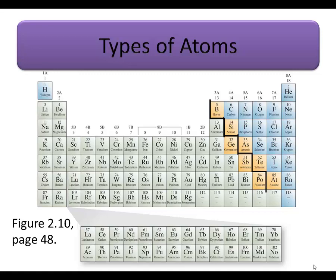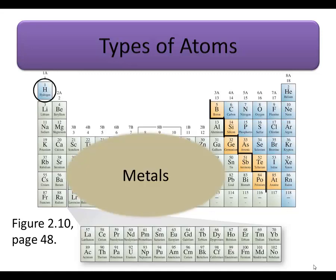This line divides the atoms commonly known as metals from the atoms commonly known as non-metals. Everything that lies to the left of the stair, with the exception of hydrogen, is considered a metal. And everything that lies to the right of the stair is considered a non-metal. Remember that hydrogen is considered to be a non-metal.